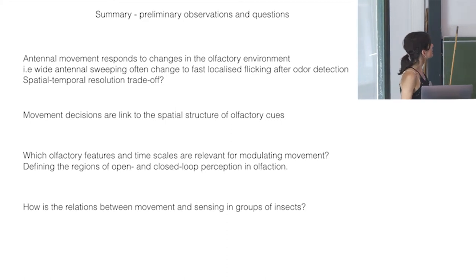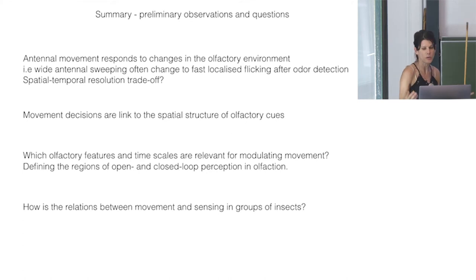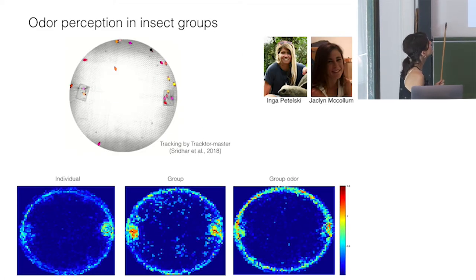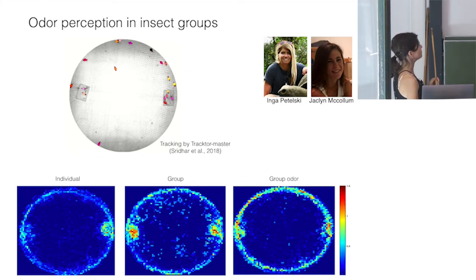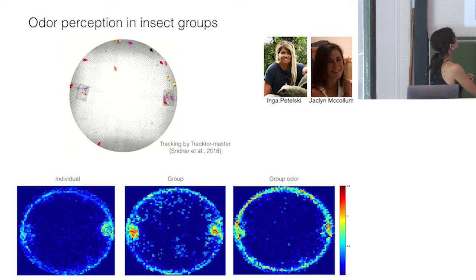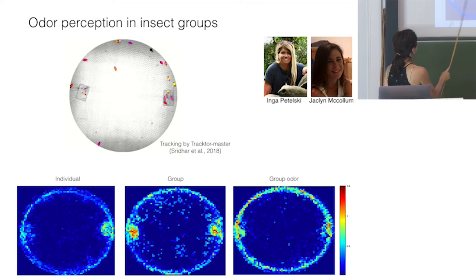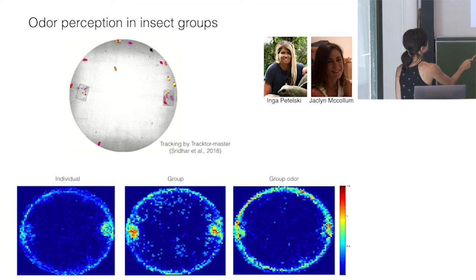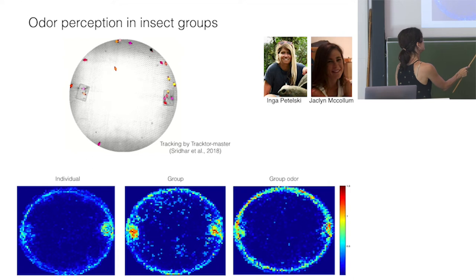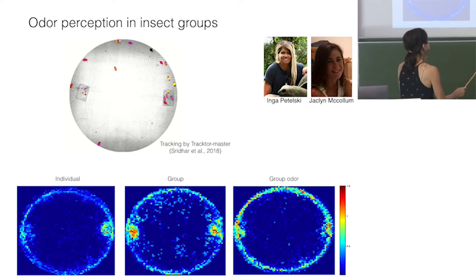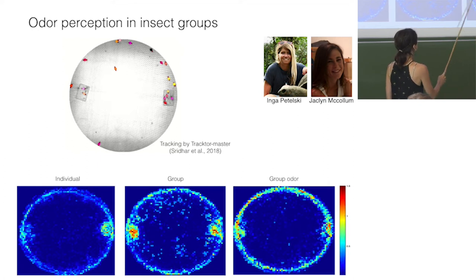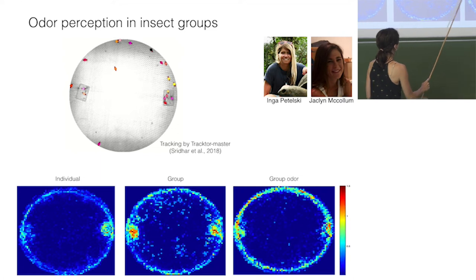The last question concerns group behavior — when the sensory agent is not one animal but a group of communicating animals. Work by Inga Petelski and Jackie McCollum tracked cockroaches in an arena with two shelters, one containing food odor and one without. Individuals alone all go to the food odor shelter; in a group, this preference is inverted. Introducing just a group odor with a single individual was sufficient to create this inversion — the group odor alone suppressed interest in the vanillin shelter.